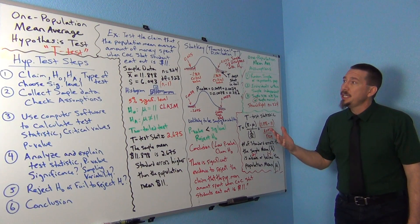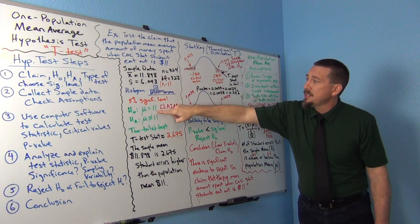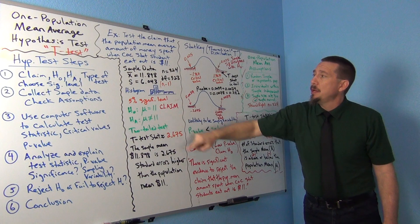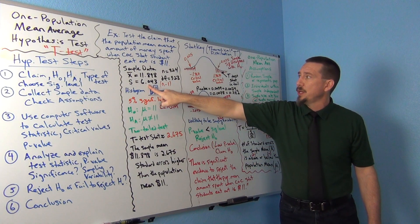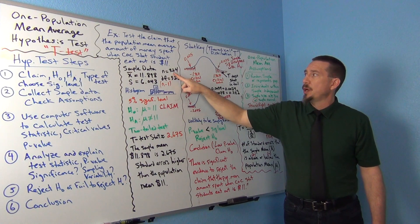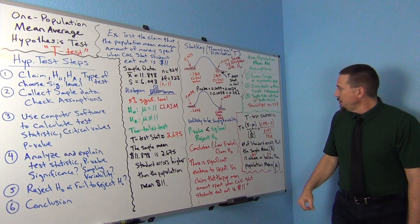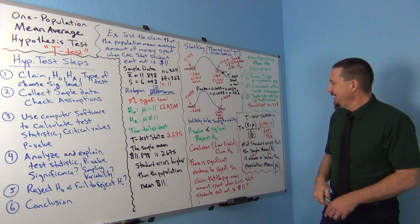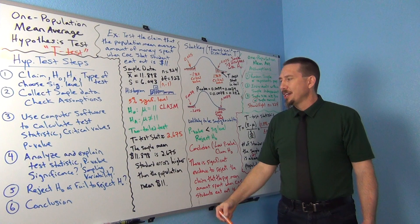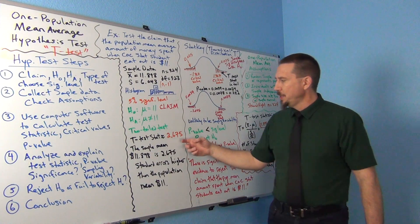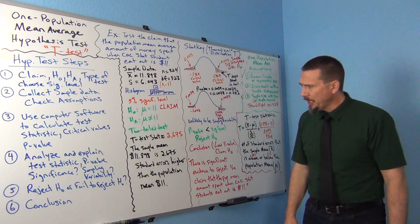So we're just plugging in numbers now. I'm going to do 11.898 minus 11, and then divide by the standard deviation, 6.043, divided by the square root of 324. If you do that calculation, you get approximately 2.675. I rounded it, but around 2.675.